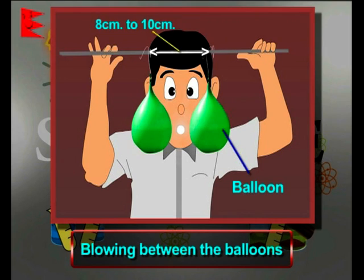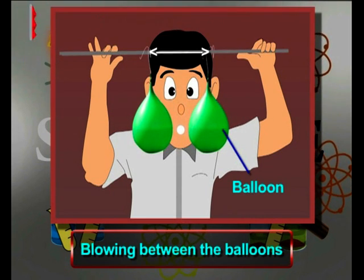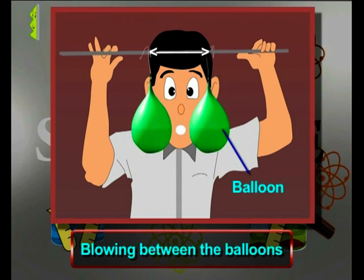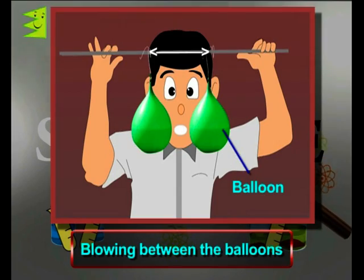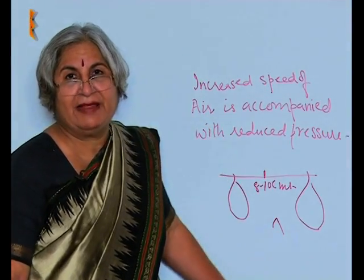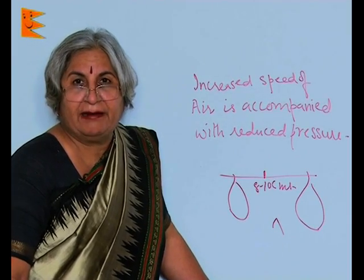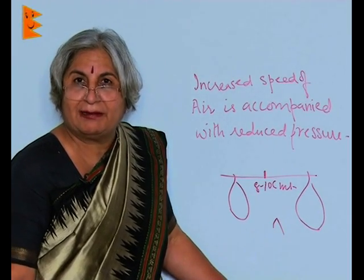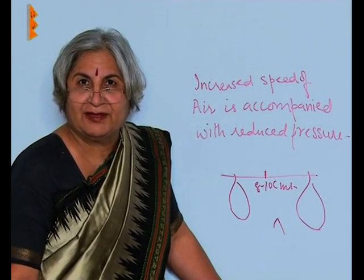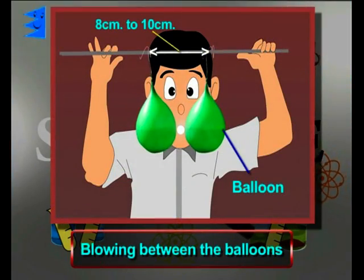Now, what should happen when the air is blown? The distance between the two balloons should be 8 to 10 centimeters. Normally, what you would like to believe is that when you blow air the balloons should move apart, but actually what happens? They start moving towards each other.